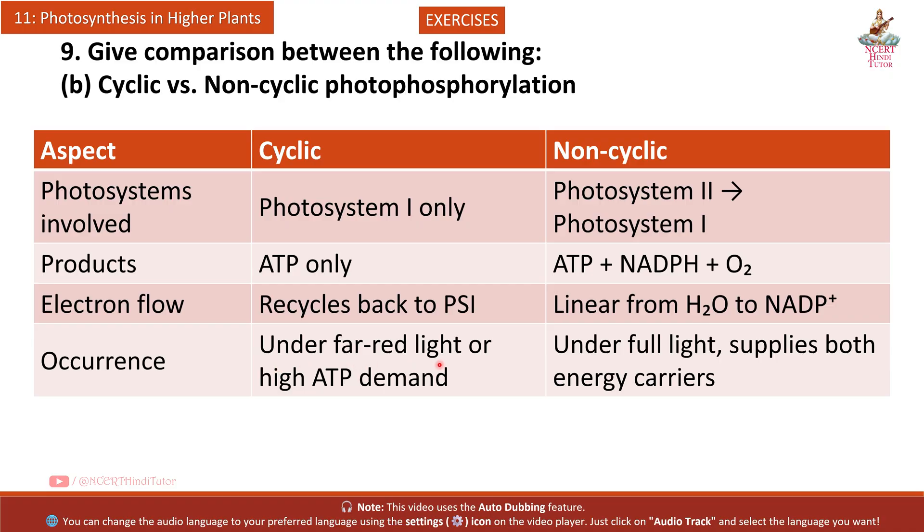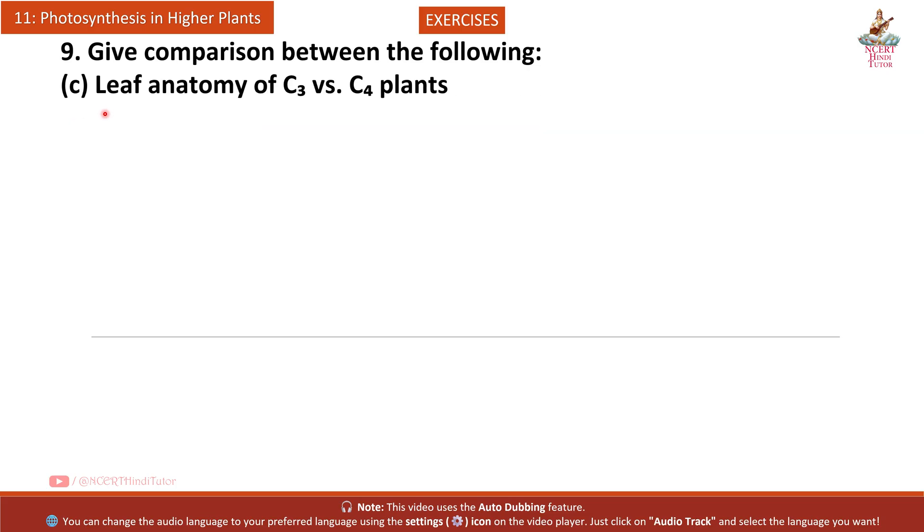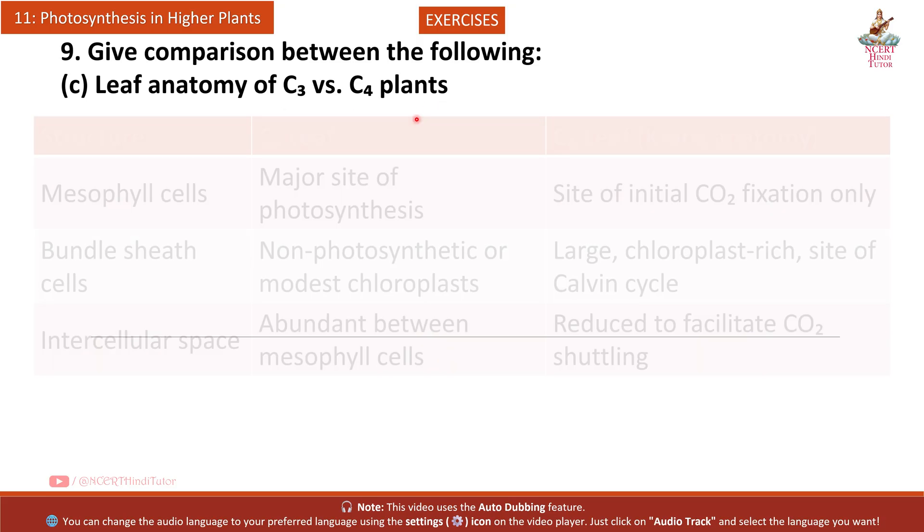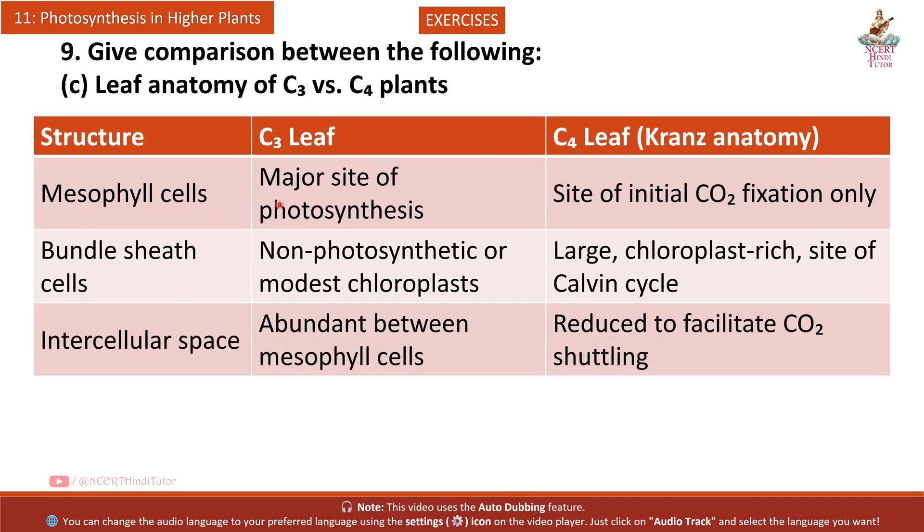Electron flow - Cyclic: Recycles back to PS1; Non-Cyclic: Linear from H2O to NADP+. Occurrence - Cyclic: Under far-red light or high ATP demand; Non-Cyclic: Under full light, supplies both energy carriers. C: Leaf Anatomy of C3 vs C4 Plants. Mesophyll - C3 leaf: Major site of photosynthesis; C4 leaf: Kranz anatomy, site of initial CO2 fixation only. Bundle sheath - C3 leaf: Non-photosynthetic or modest chloroplasts; C4 leaf: Large chloroplasts, site of Calvin cycle. Intercellular space - C3 leaf: Abundant between mesophyll; C4 leaf: Reduced to facilitate CO2 shuttling.